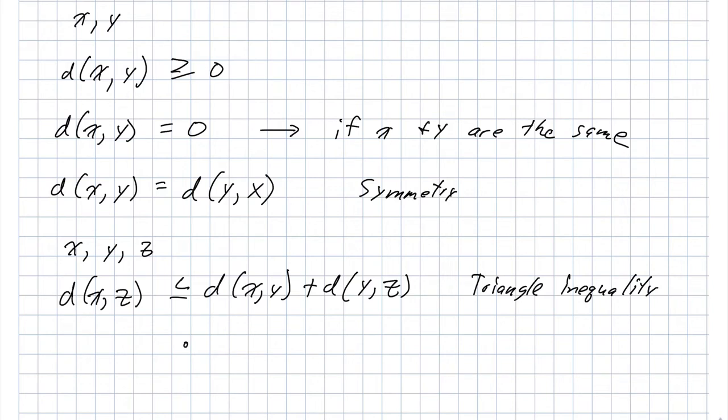And geometrically, we can draw this out, x, y, and z. The distance from x to z is less than or equal to the sum of these two distances here. So this is what we mean by a proper metric distance measure.